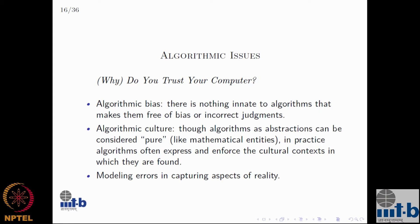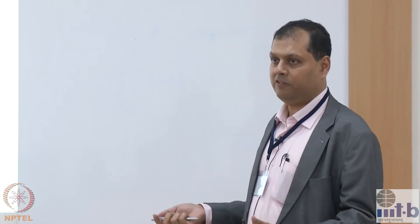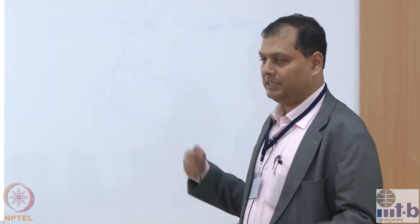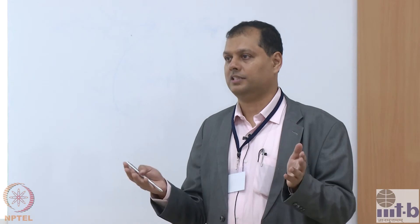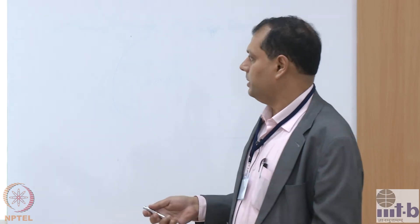To what extent can we actually understand or accept algorithms themselves? Algorithmic bias: it turns out there is nothing innate in algorithms that makes them free of bias or incorrect judgment. Algorithms as abstractions are quite pure — like the GCD algorithm, there is no culture to it, it doesn't care who you are, it will not discriminate. But that's not how it is in practice. Algorithms often express and enforce the culture of the people who created them.